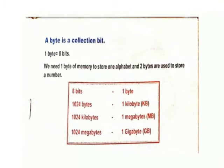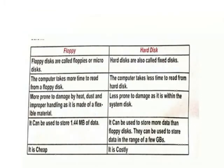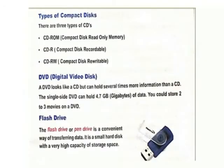One byte is equal to 8 bits. 1024 bytes equal to 1 kilobyte. 1024 kilobytes equal to 1 megabyte. 1024 megabytes equal to 1 GB, that is gigabyte. Let us see about secondary memory. Secondary memory includes floppy disk, hard disk, and compact disk.